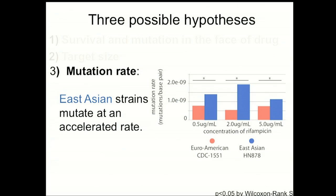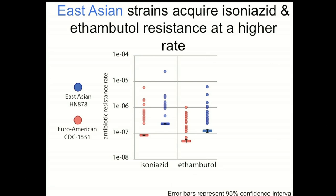If that's true, you would expect it to extend to other antibiotics. So we looked at fluctuation analysis data on isoniazid and ethambutol to ask whether the East Asian lineage acquires drug resistance more rapidly in those conditions. And in fact, that's what we find — again a four- to five-fold difference between these two strains on both drugs, supporting the idea that the East Asian lineage is able to more quickly acquire drug resistance likely due to an increase in mutation rate.